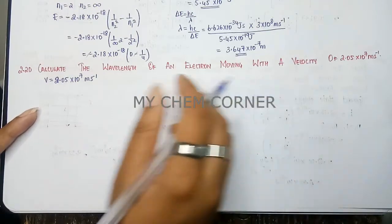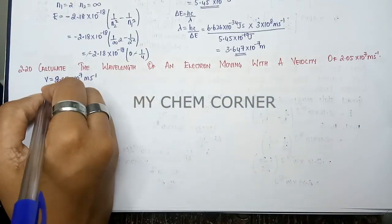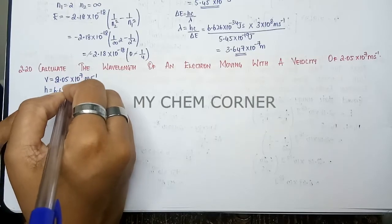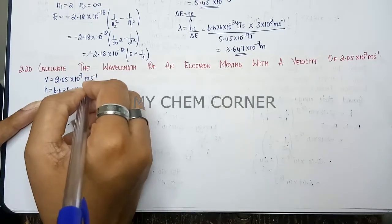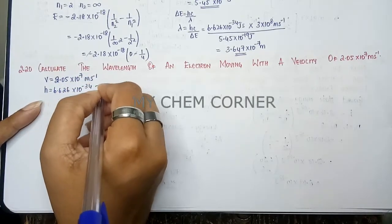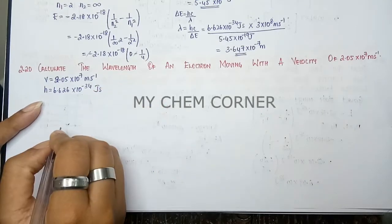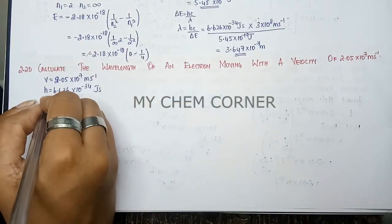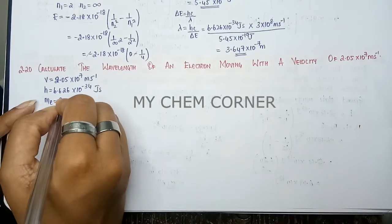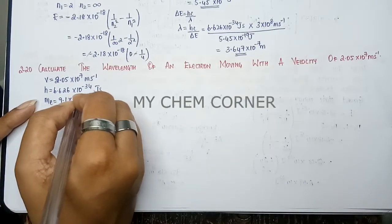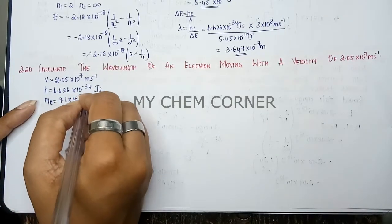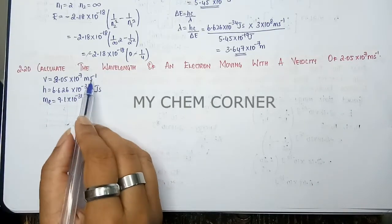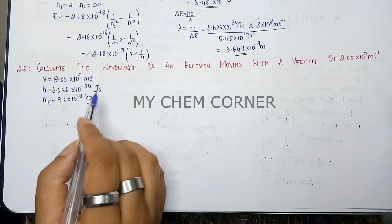The other parameters we need: h (Planck's constant) is given as 6.626×10⁻³⁴ joule-second. Since we are talking about an electron, the mass of the electron is known to us — the mass of the electron is 9.11×10⁻³¹ kilogram.